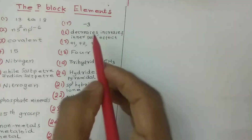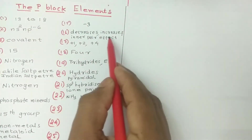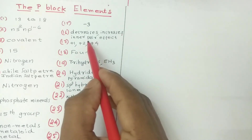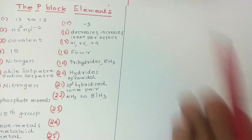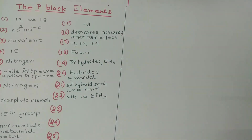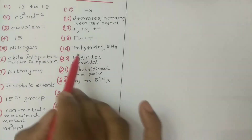3 answer. 8 answer — decreases, then increases. 3 answer — inner pair effect. 14 — plus 1, plus 2, plus 4, plus 4. 15 — plus 3.